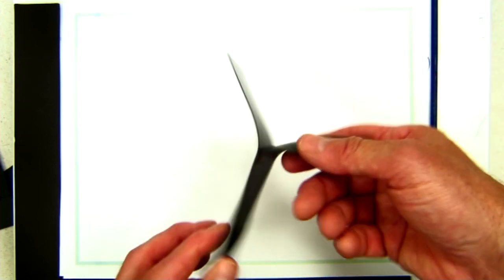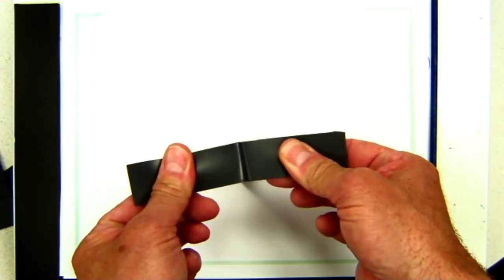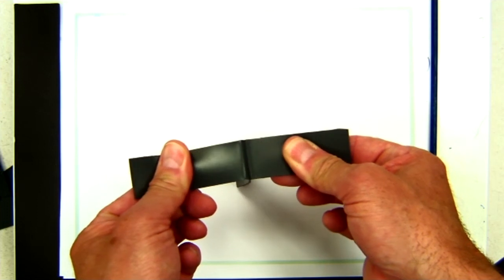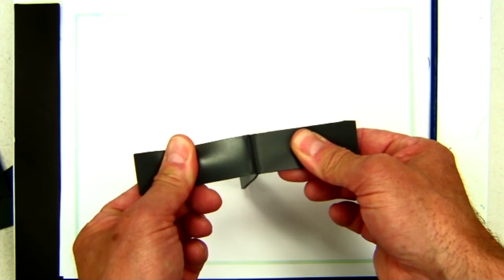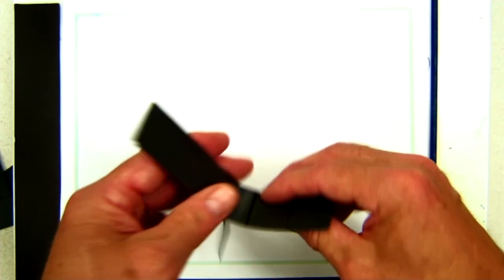And in the peel test, the movable grip will start pulling the seam apart in peel, trying to pull or peel open the seam in this particular test.